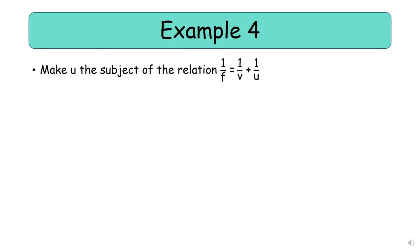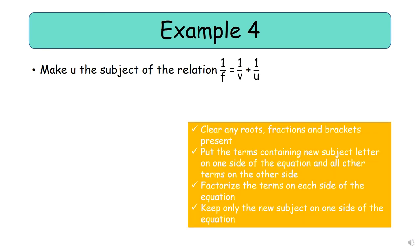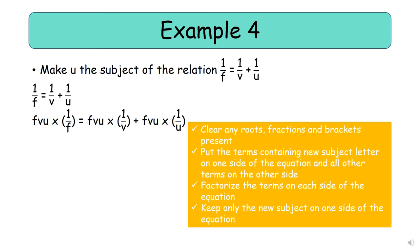Example 4: make u the subject of the relation 1/f = 1/v + 1/u. This equation has three fractions, so we start by clearing all fractions. We multiply through each term by the LCM, which is the product of all three denominators: fvu. So fvu × (1/f) + fvu × (1/v) + fvu × (1/u) gives us vu = fu + fv, because f cancels with f, v cancels with v, and u cancels with u.